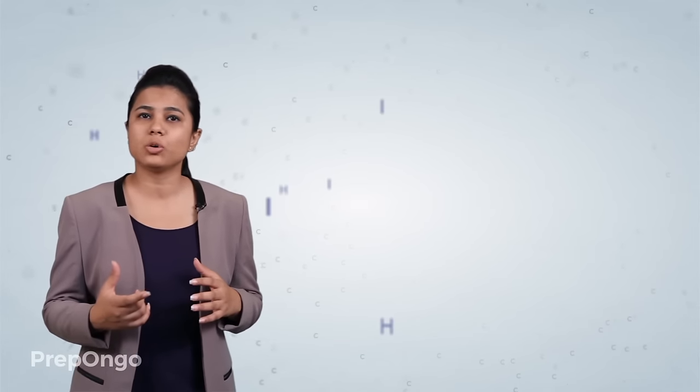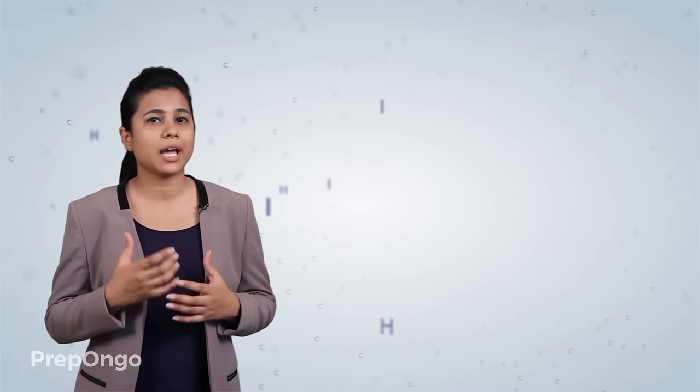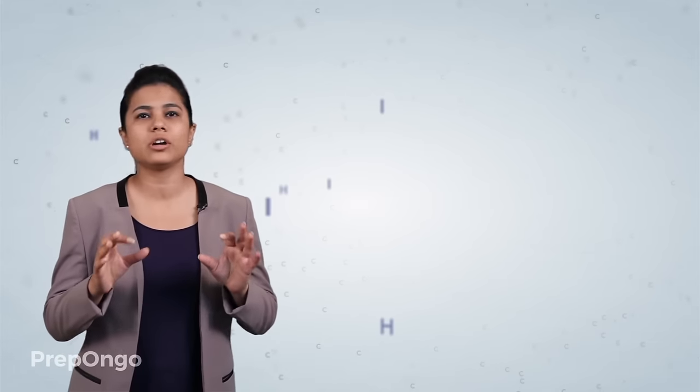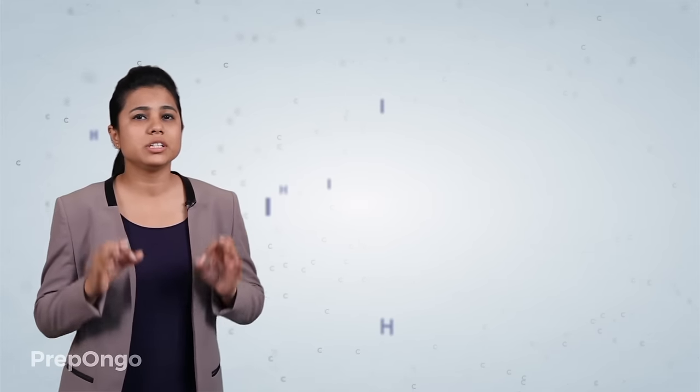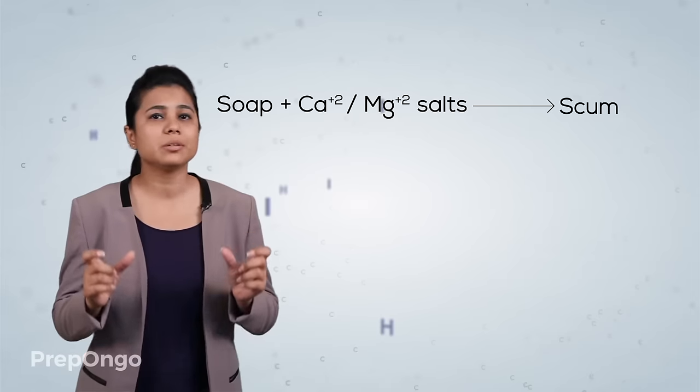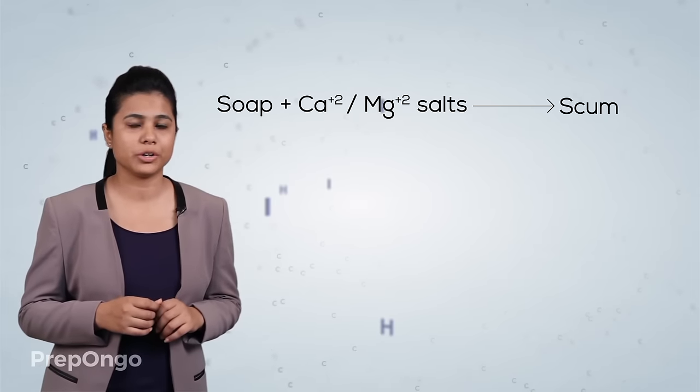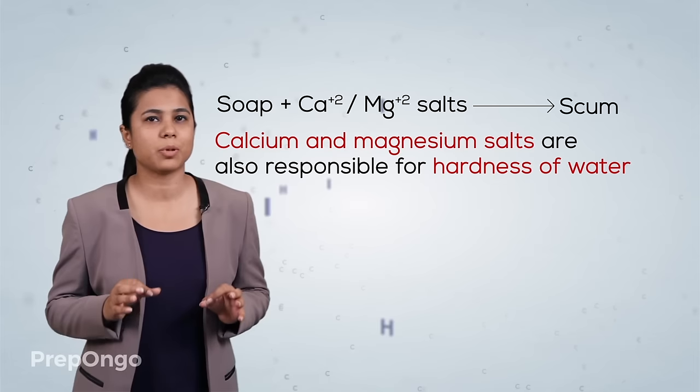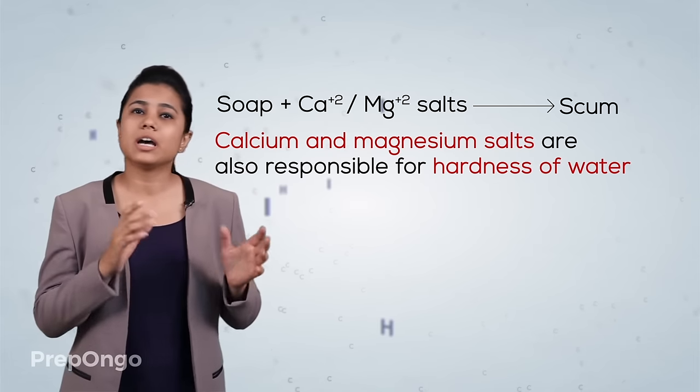You must have also noticed that sometimes when you apply soap while taking a bath there is a formation of scum or insoluble precipitate. This is due to the reaction of soap with the calcium and the magnesium salts which are present in the water. These calcium and magnesium salts are also responsible for the hardness of water.